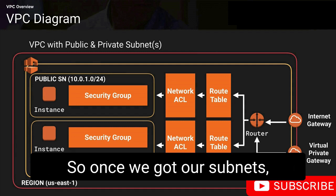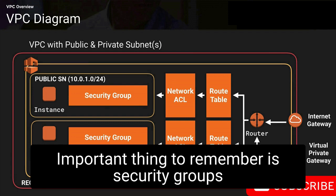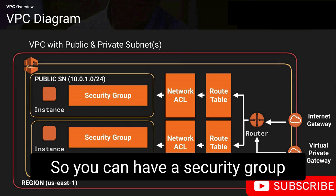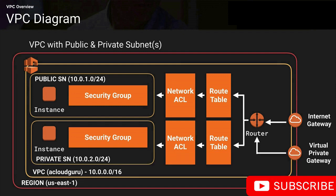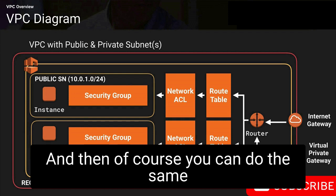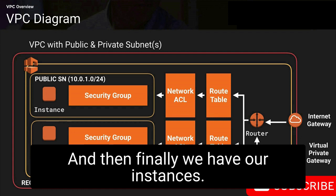Once we have our subnets, we then have our security groups. An important thing to remember is that security groups and network ACLs can span subnets. You can have a security group stretched across two, three, or four different subnets, and you can do the same with network ACLs and route tables. And then finally, we have our instances.